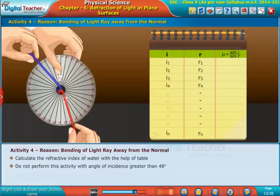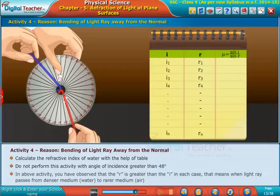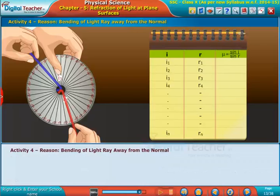In the above activity you have observed that the r is greater than the i in each case. That means when light ray passes from denser medium water to rarer medium air, it performs in somewhat reverse approach to that of what we observed in lab activity one.